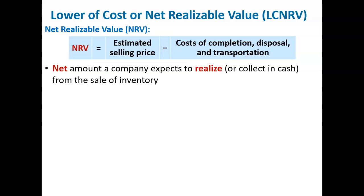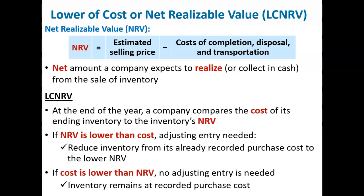After comparing cost and net realizable value, a company reports inventory at the lower of the two amounts. If net realizable value is lower than cost, we need an adjusting entry to reduce inventory from its already recorded purchase cost to the lower net realizable value. Net realizable value then becomes the new carrying value of the inventory reported in the balance sheet. If cost is lower than the net realizable value, no adjusting entry is necessary because inventory has already been recorded at cost at the time it was purchased, and this cost is lower than the total net realizable value at the end of the period.